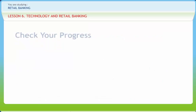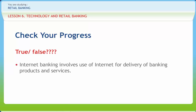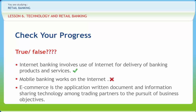Let us check if we have understood the various concepts discussed in this lesson. Internet banking involves use of internet for delivery of banking products and services — Right. Mobile banking works on the internet — Wrong. E-Commerce is the application of communication and information sharing technology among trading partners to the pursuit of business objectives — Wrong.